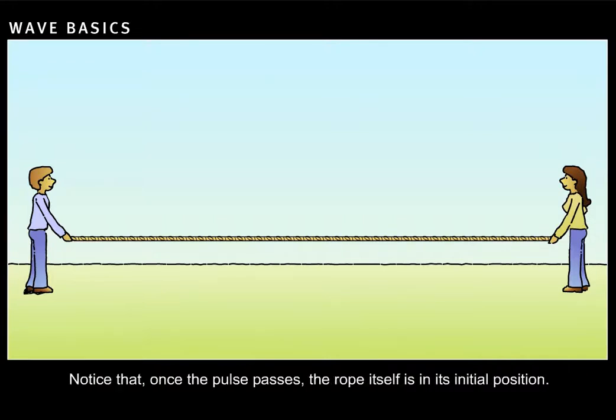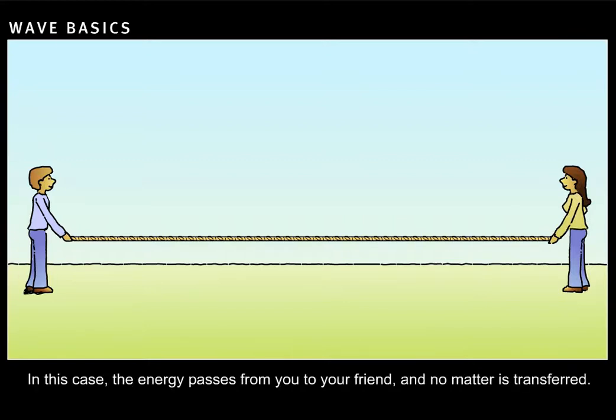Notice that once the pulse passes, the rope itself is in its initial position. In this case, the energy passes from you to your friend, and no matter is transferred.